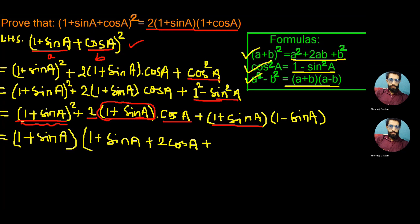In the same way, from the last part, there will remain one minus sine A. So we write that here. Now in the second bracket, plus sine A and minus sine A can be cancelled, being equal values with opposite sign.